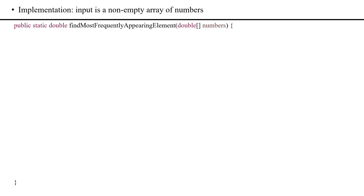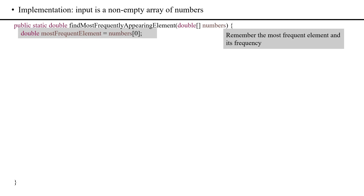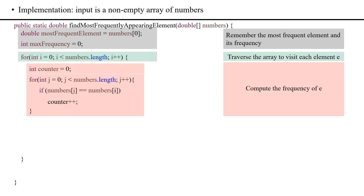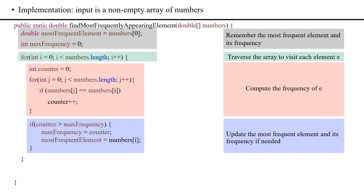Now let's implement this updated strategy. We still have the same method heading. In the method body, we create a variable most_frequent_element and initialize it with the first element in the input array. We create another variable max_frequency. We use a for loop to visit each element, and inside we compute the frequency of numbers[i] using an inner loop, just like before. Then we compare the current frequency counter with max_frequency. If counter is larger than max_frequency, we update max_frequency to counter and most_frequent_element to numbers[i]. After the loop, we return most_frequent_element.